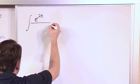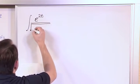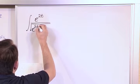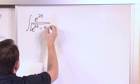So e to the 2t over, on the bottom we have a big square root, e to the 2t minus 4 dt.